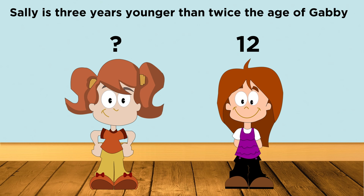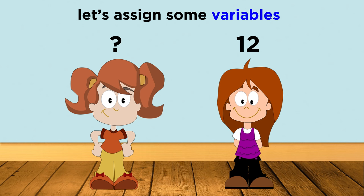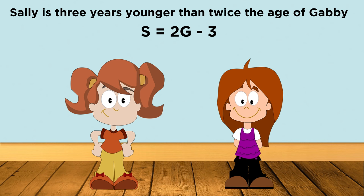Let's find an equation that can describe this scenario. The first thing we have to do is assign some variables. What do we know, and what do we want to know? Well there's Gabby's age, let's call that G. Then there's Sally's age, let's call that S. How are these two values related? Well we know something about S, we know that it is three less than twice G. This means that S equals two G minus three. This equation says exactly the same thing as this sentence, just with symbols instead of words.